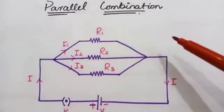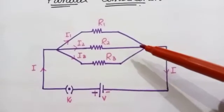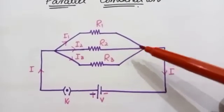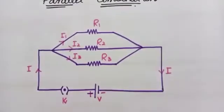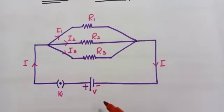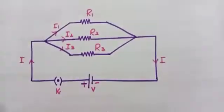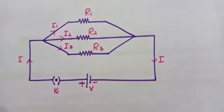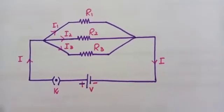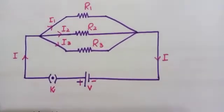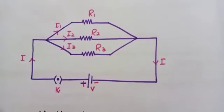The next topic is parallel combination. This is the circuit diagram for parallel combination of resistors — there are three resistors connected in parallel. The current in each resistor will be different due to the different values of resistance, and the voltage across the three resistors will be equal to the total voltage of the battery.